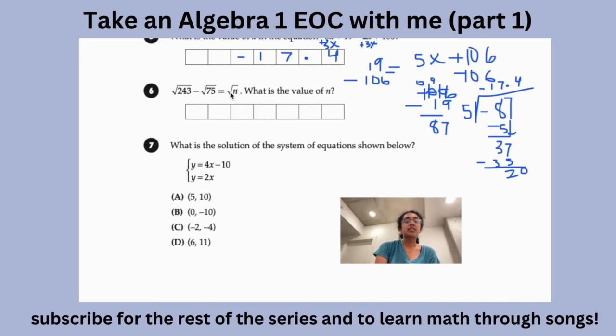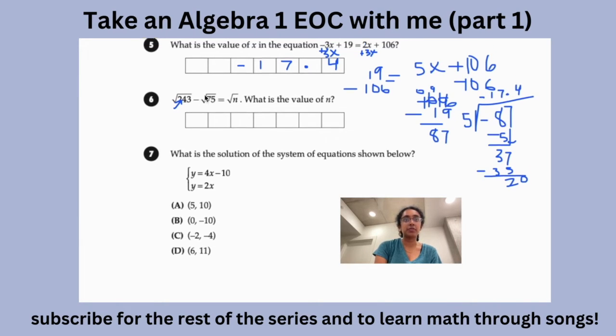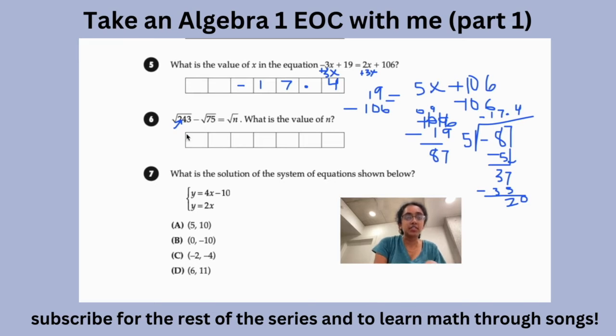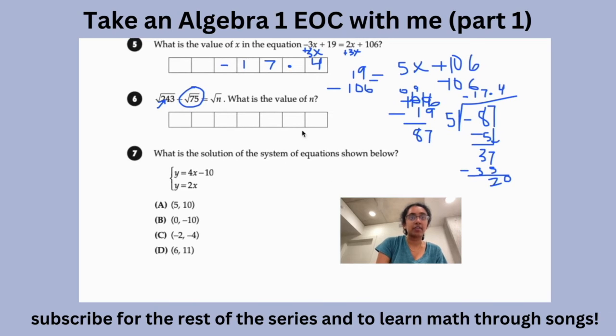So then we have √243 minus √75 equals √n. What is the value of n? So what we need to do here is to make sure that whatever is inside the square root has to be the same for both of these for us to be able to subtract. So let us do that really quickly. So what are the different... How can we simplify √75? Let's try to do that first.